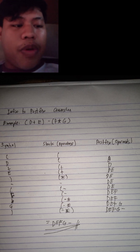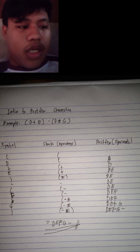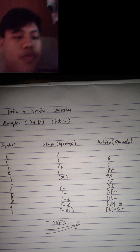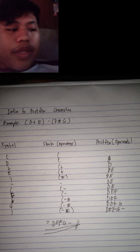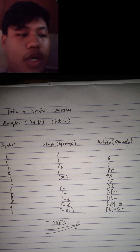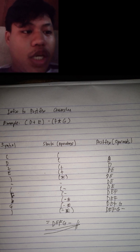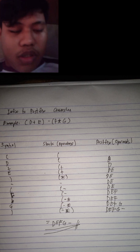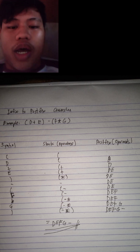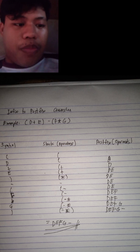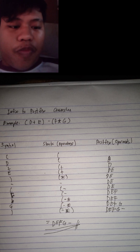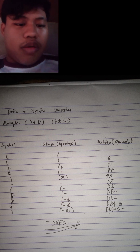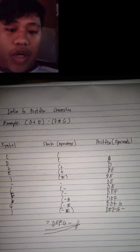First, you must put the open parenthesis in the symbol column, and you will also put the open parenthesis in the stack for operators. In the next line, you will put the letter D in the symbol column, and also put the open parenthesis in the stack. In postfix, you will also put the letter D because it is an operand.